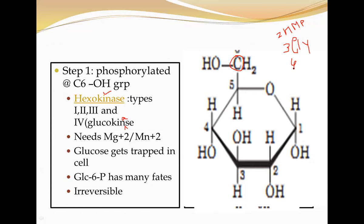Most importantly, this reaction is irreversible. Once glucose is phosphorylated to glucose-6-phosphate with the help of hexokinase, glucose-6-phosphate cannot be reconverted back to glucose using the same enzyme. It is a thermodynamically impossible reaction — hence, it is irreversible.